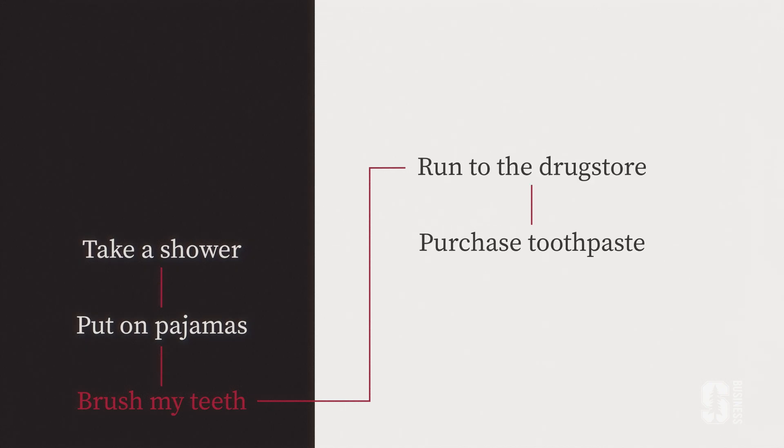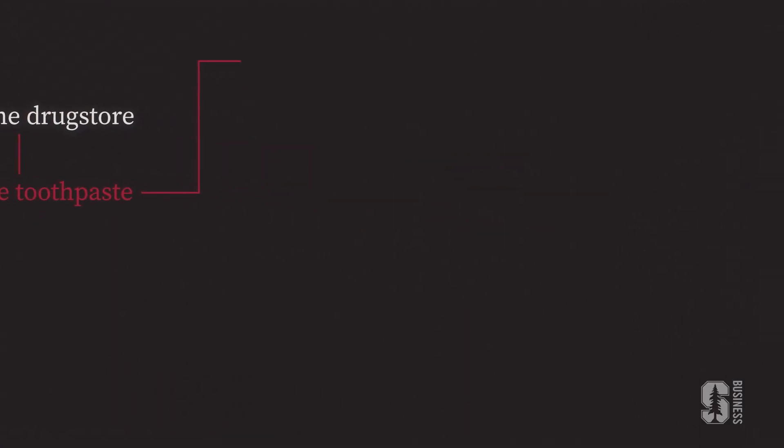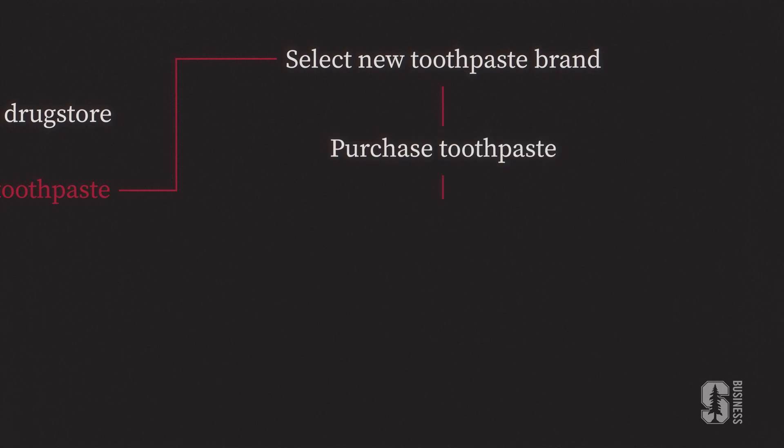Should I run to the drugstore? What if they're out of my regular brand of toothpaste? Those sorts of decisions create new and different paths for me to complete my task. This is how algorithms get more complicated.